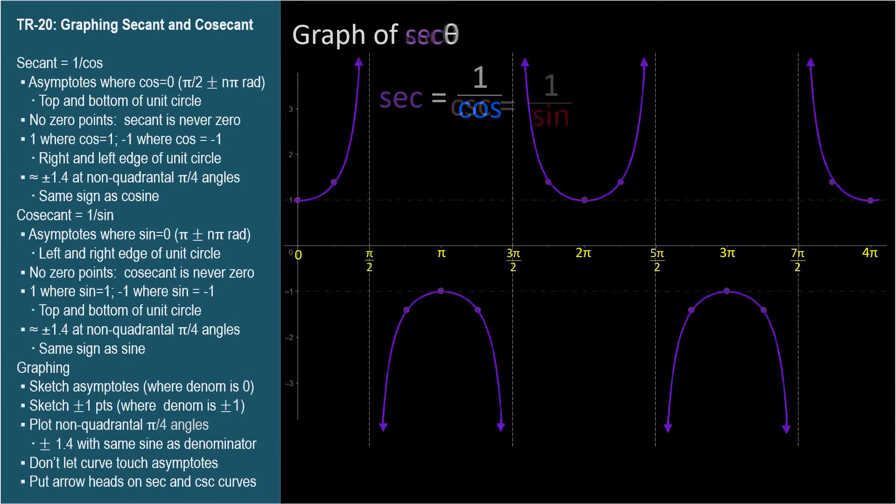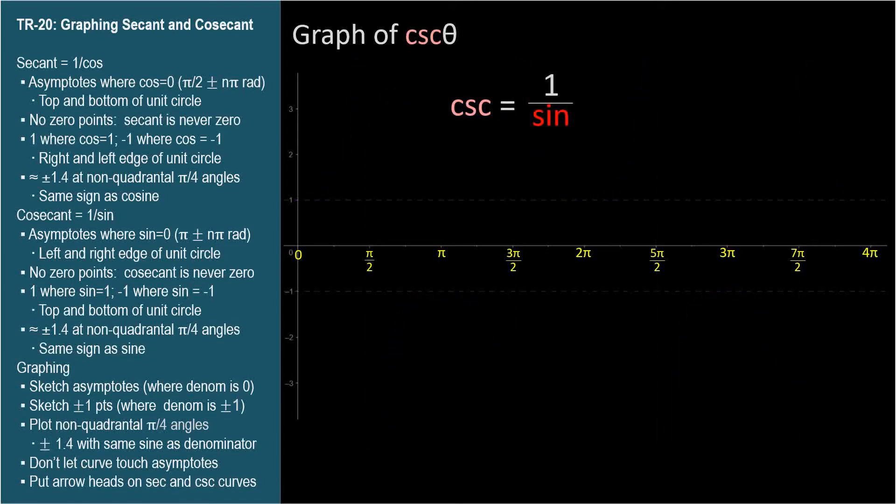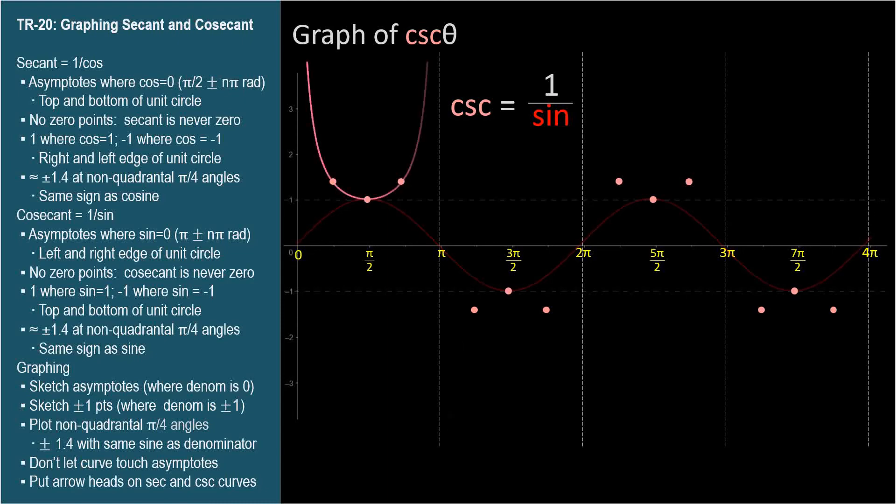Plotting the cosecant function is a little anticlimactic since it has the exact same relationship with sine. Start with the asymptotes, which are where sine equals 0. Plot the sine equals 1 and negative 1 points at the other quadrantal angles. Plot the cosecant at the pi over 4 angles. Again, it will be plus or minus 1.4 since the sine of these angles is either square root of 2 over 2 or negative square root of 2 over 2. Then draw the curve between the asymptotes.